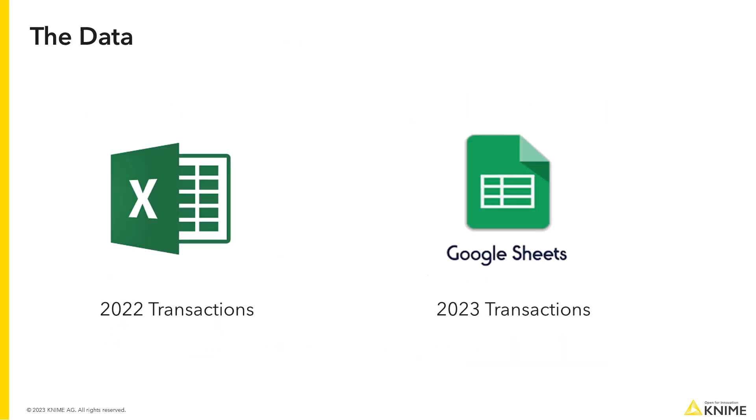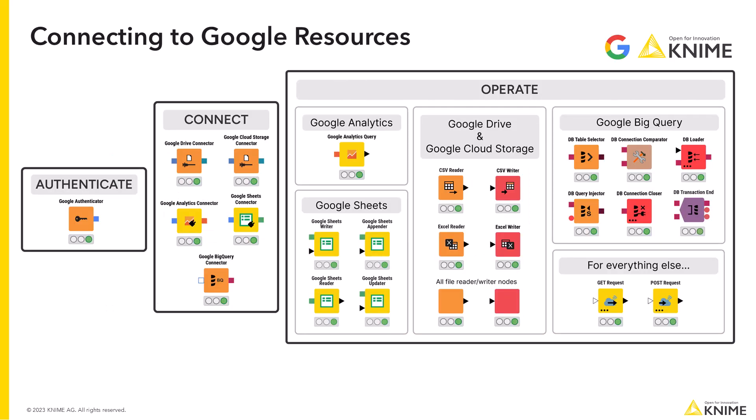In this example, up to 2022, business transactions were recorded in an Excel file. Starting from 2023, the owner moved to a Google spreadsheet. KNIME Analytics Platform offers a large number of nodes to integrate with Google resources. It all starts with the Google Authenticator node.